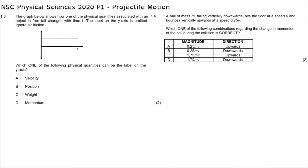Question 1.3 of multiple choice reads: the graph below shows how one of the physical quantities associated with an object in free fall changes with time t. The label on the y-axis is omitted. Which physical quantity can be the label on the y-axis? Since the object is in free fall, only gravity acts on it, so acceleration is constant. The weight force is the only constant option given, making the correct answer C.